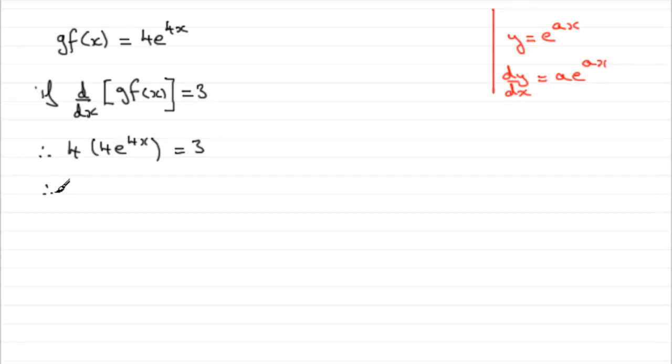So what we've got then is 16e to the 4x equals 3. And what we need to do now is to divide both sides by 16, giving us e to the 4x equals 3 over 16.